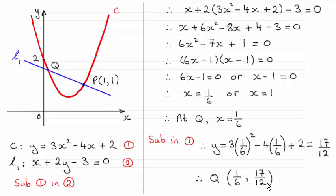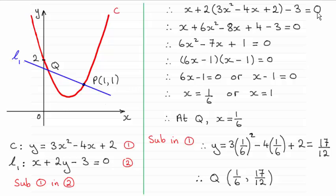Just to take you through the method: like any question where you want to find the intersection of two curves, all you need to do is use simultaneous equations. We've got the equation of C and the equation of L1, and we use the method of substitution. I've substituted equation 1 into equation 2 — wherever there's a y, I replace it with 3x squared minus 4x plus 2. So that gives us this equation here.